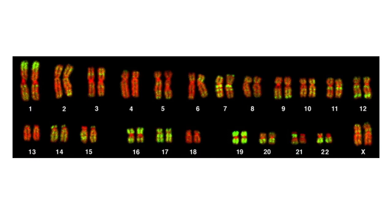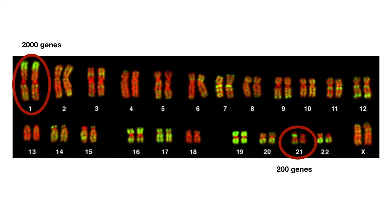The bigger the chromosome, the more genes it contains within its DNA. For example, chromosome number 1 contains about 2,000 genes. Chromosome number 21, a much smaller chromosome, contains an estimated 200 genes. The X chromosome contains DNA that codes for about 800 genes, while the Y chromosome only codes for about 63 genes.